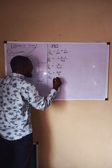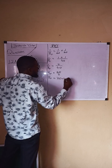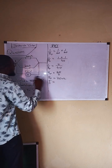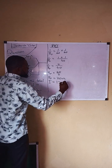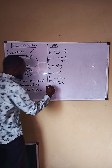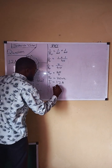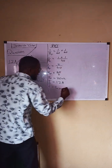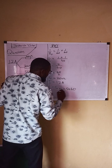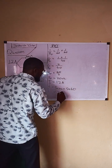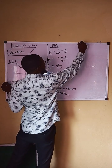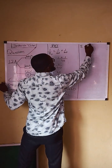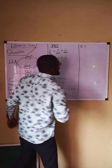Therefore the total resistance is 20 ohms. We now have all our known values: total resistance is 20 ohms, current in the circuit is 1.2 amperes, and time is 5 minutes. We convert the time to seconds: 5 times 60 equals 300 seconds.